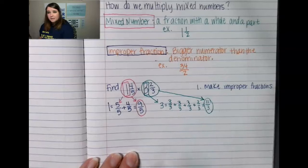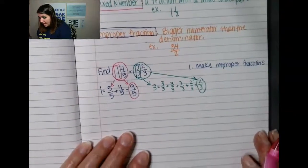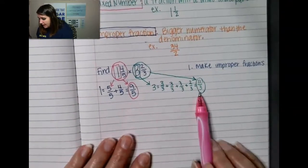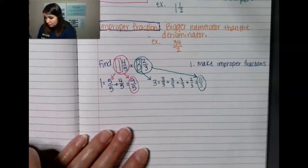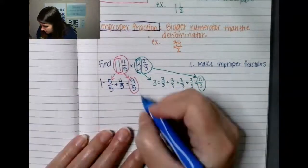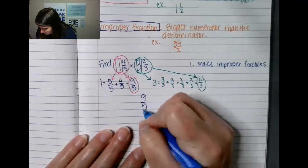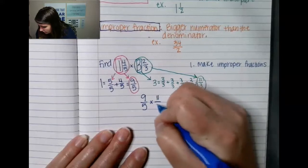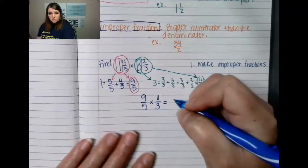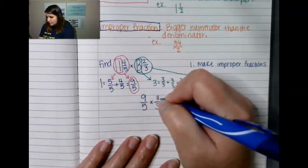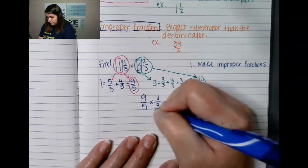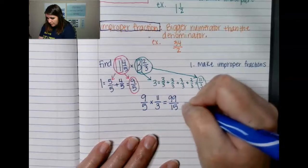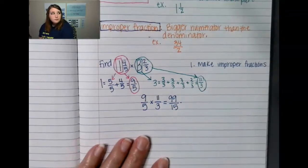Now I'm going to take nine-fifths and eleven-thirds and multiply them because they're both ready. So nine-fifths times eleven-thirds — I multiply straight across. Nine times eleven is ninety-nine, and five times three is fifteen, giving me ninety-nine over fifteen.